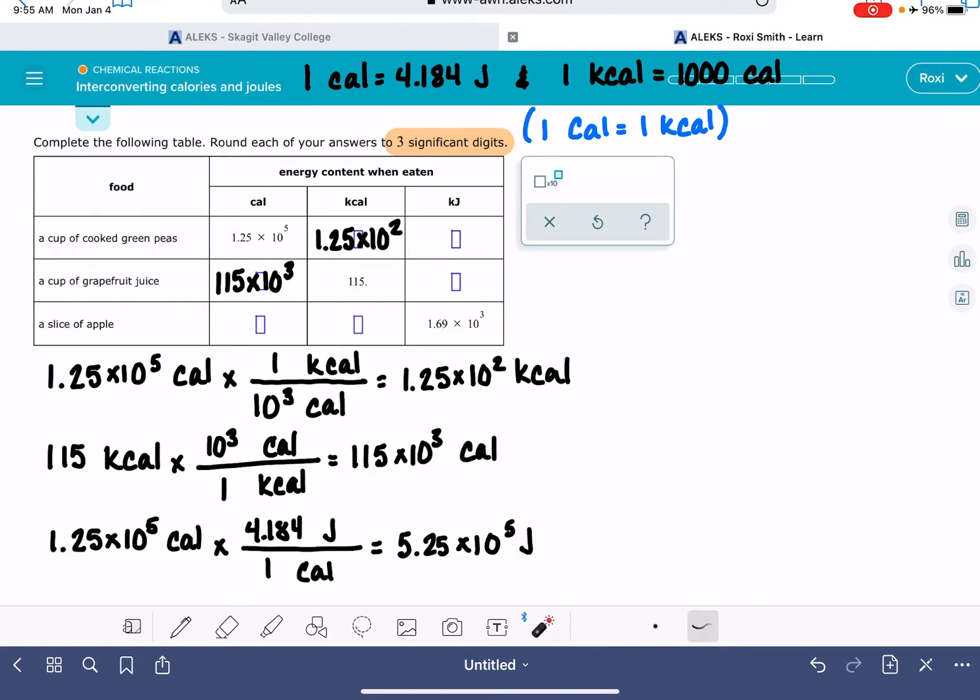And joules is not the unit that I'm looking for. I'm looking for kilojoules. So that means I need to do one more conversion. I want my joule unit on the bottom, kilojoule unit up on top. One kilojoule is 1,000 joules. And so this is going to give me 523 kilojoules.